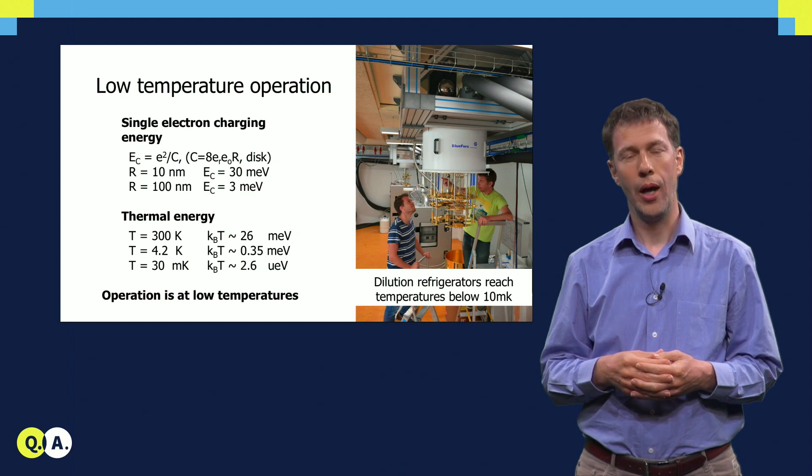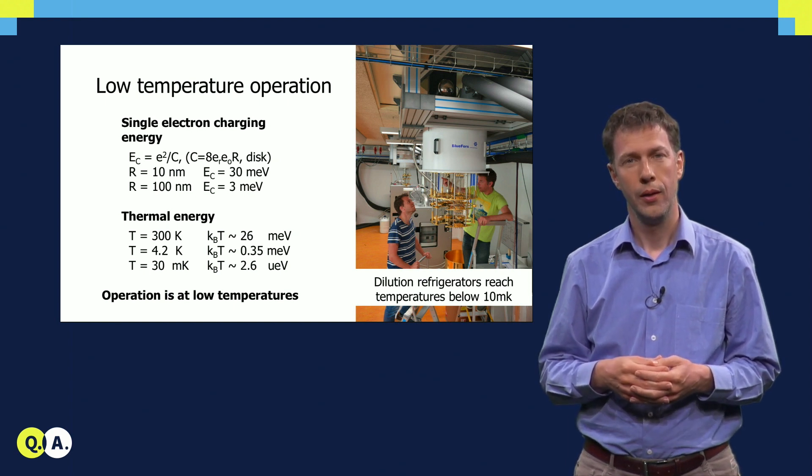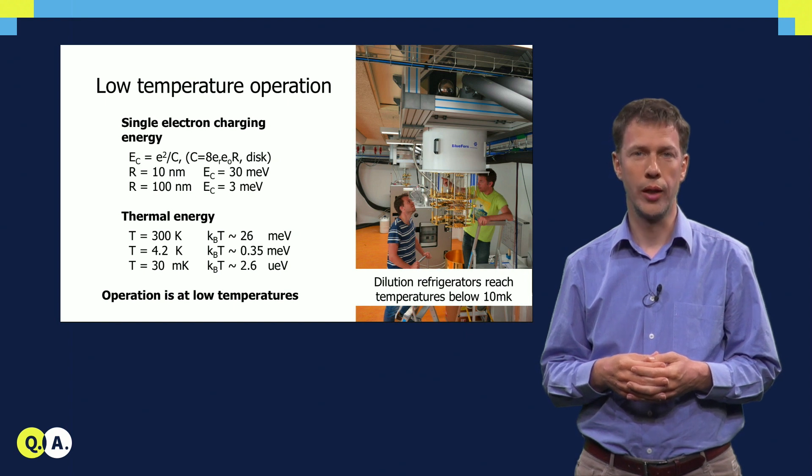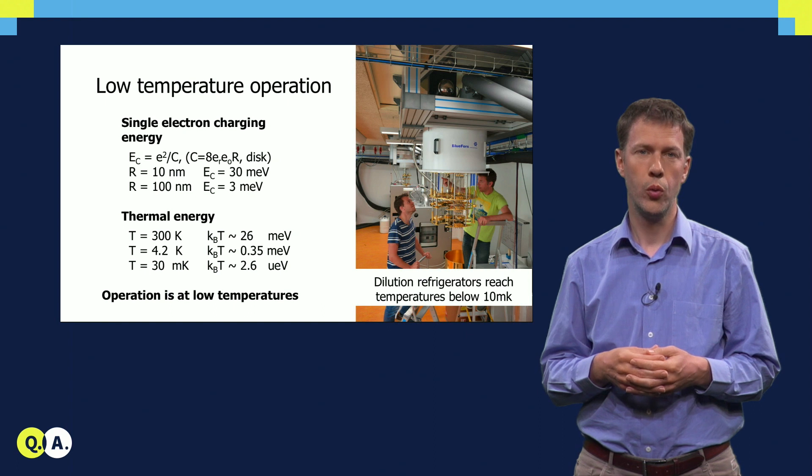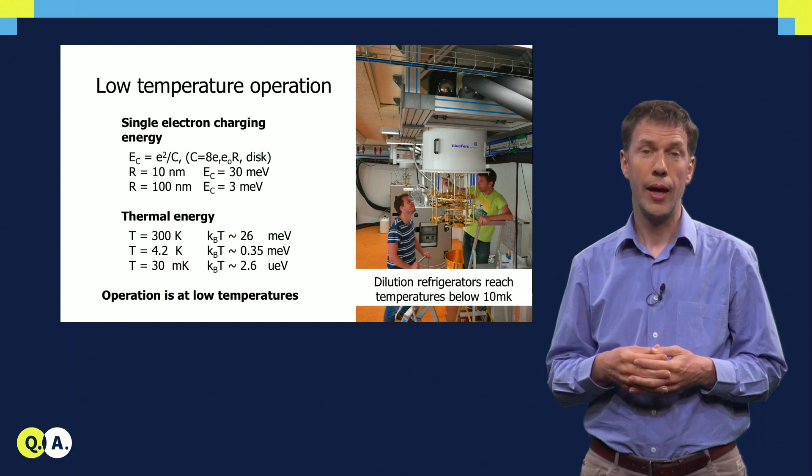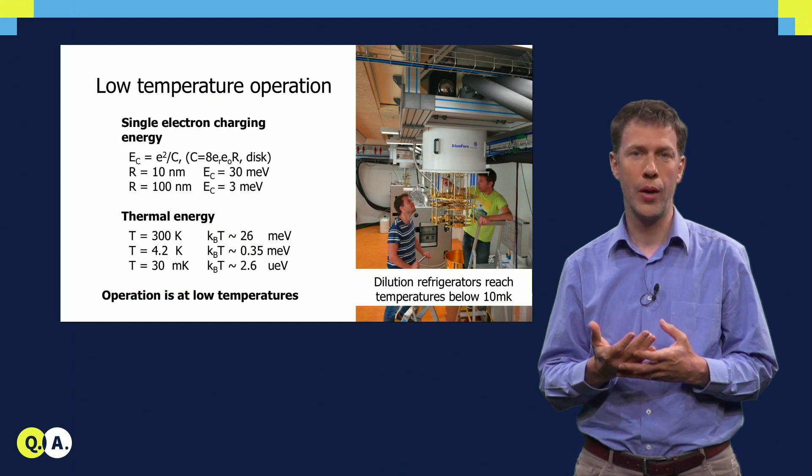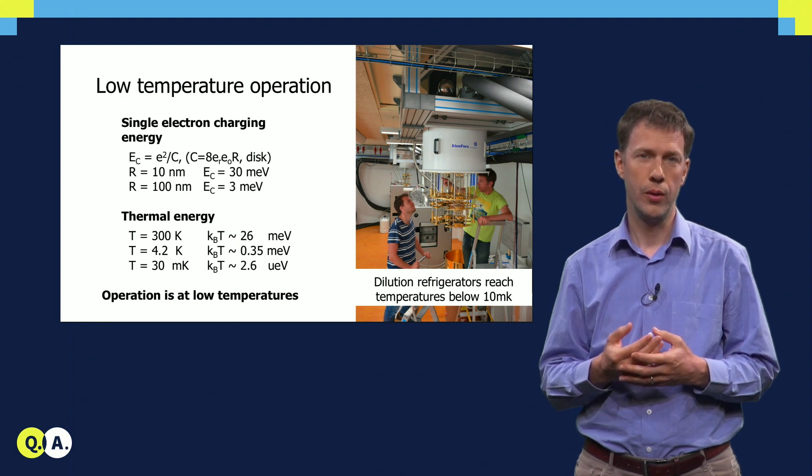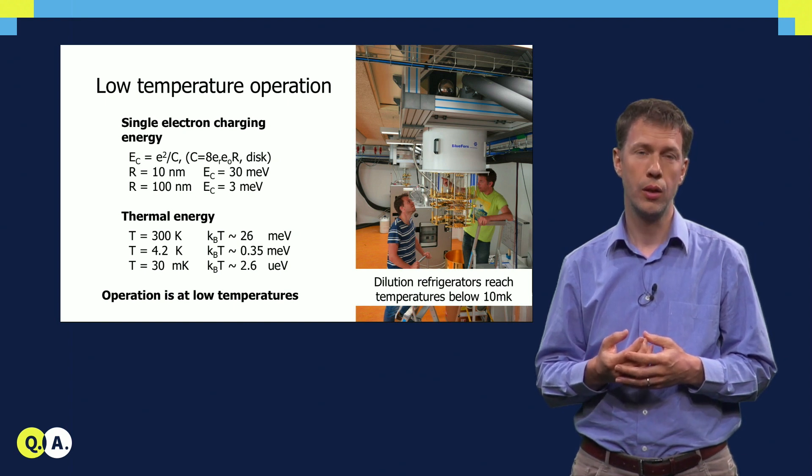So how in the world can we isolate individual electrons and control them? It starts with the notion of the charging energy. That is the energy that results from the Coulomb repulsion between electrons, and as we add charges to the island, this costs energy. If you go to very small capacitances, it turns out that the charging energy, the energy required to add one single electron charge, can be larger than the thermal energy.